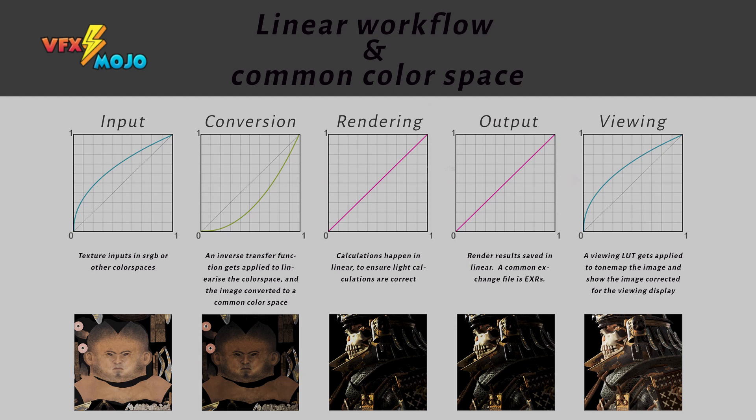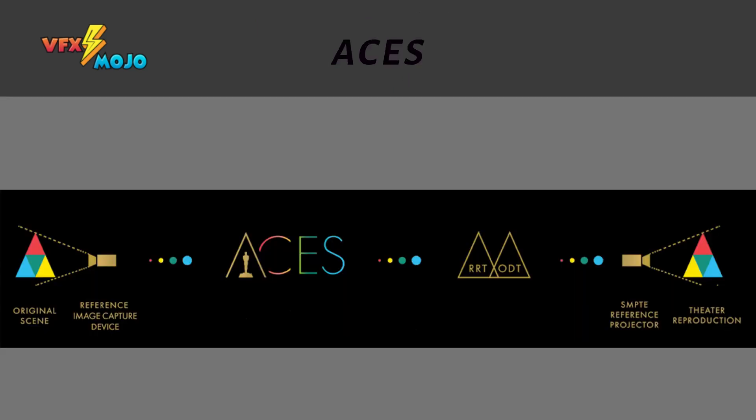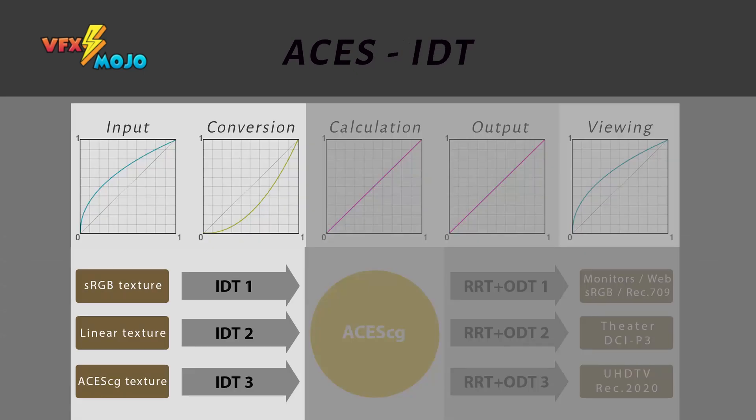This is where ACES comes into play. ACES, which stands for Academy Color Encoding System, attempts to standardize and simplify color management. It is a four-step process. The first step is the IDT — the input transforms, which convert sources into the ACES color spaces.